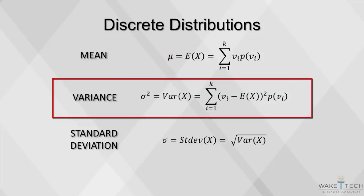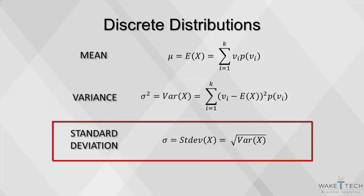The variance is a weighted sum of the squared deviations of the possible values from the mean, where the weights are, again, the probabilities. The standard deviation is simply the square root of the variance. Standard deviation is denoted by the Greek letter sigma.